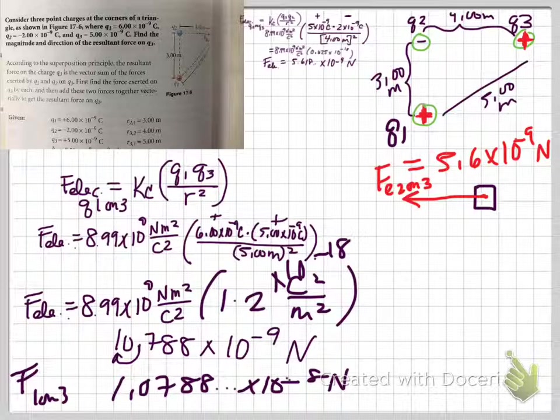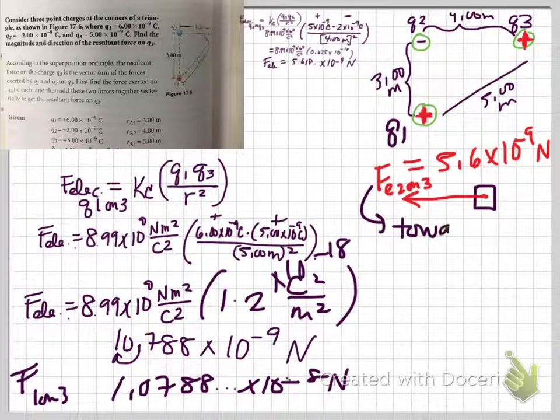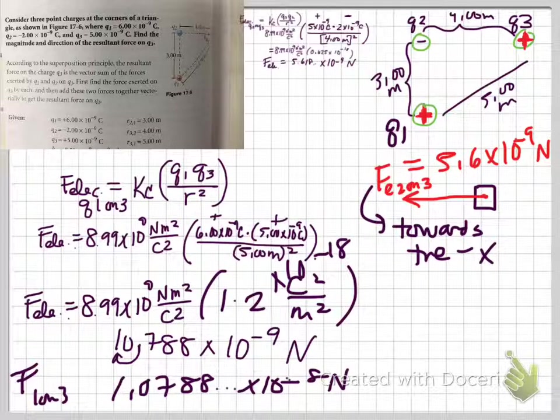That's the electrical force of one on three. There's something I forgot or didn't talk about until just now. It was easy to forget with that first force that I found because that first force was directly along the x-axis. What's a vector without a heading?